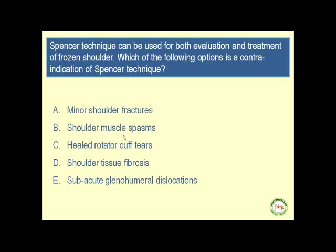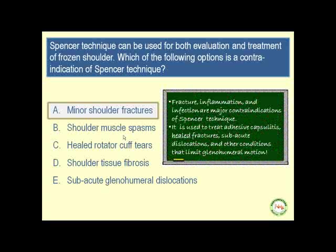The Spencer technique can be used for both evaluation and treatment of frozen shoulder. Which of the following is a contraindication of the Spencer technique: minor shoulder fractures, shoulder muscle spasms, healed rotator cuff tears, shoulder tissue fibrosis, or sub-acute glenohumeral dislocations? The contraindication is minor shoulder fractures. Fractures, inflammation, and infections are major contraindications of the Spencer technique.